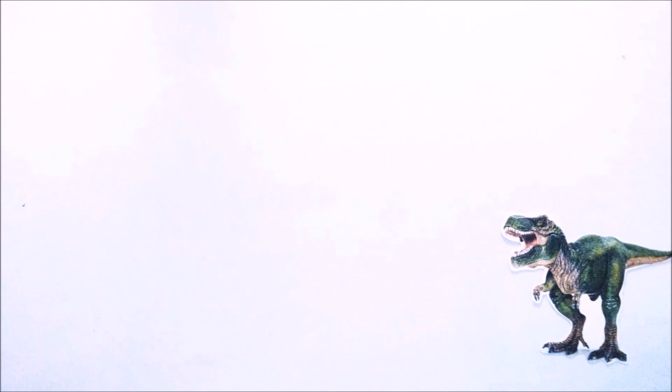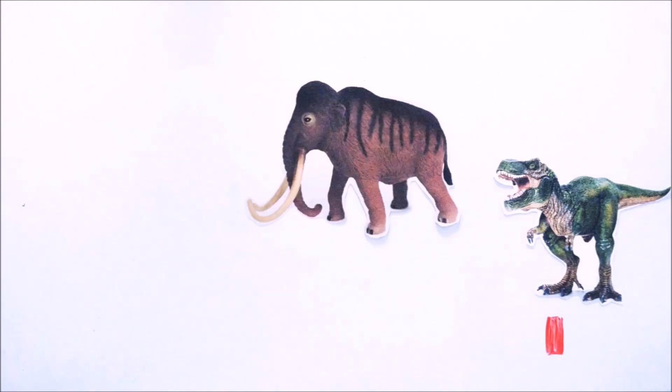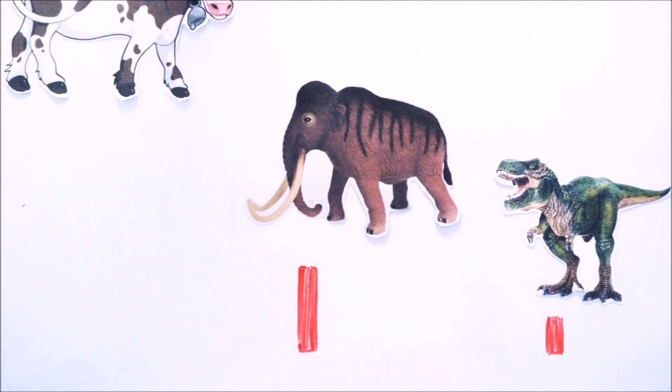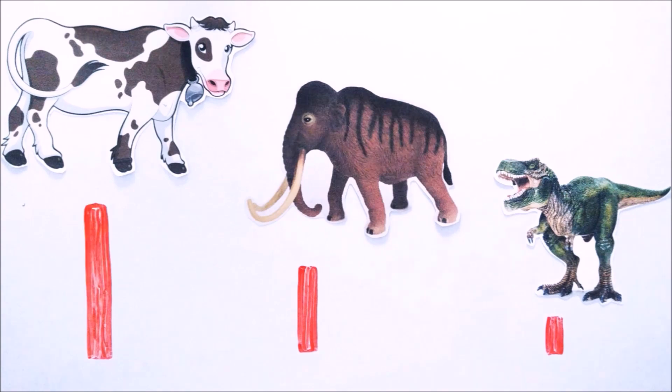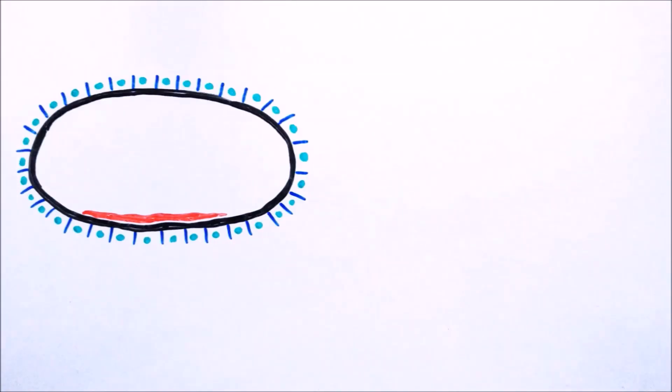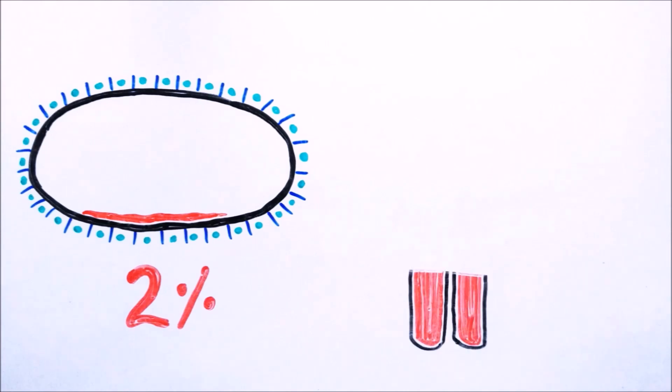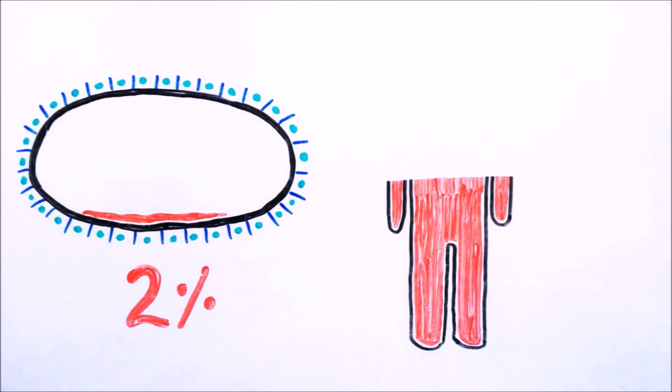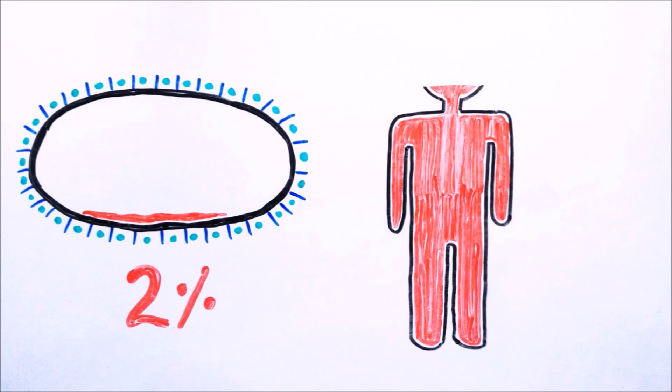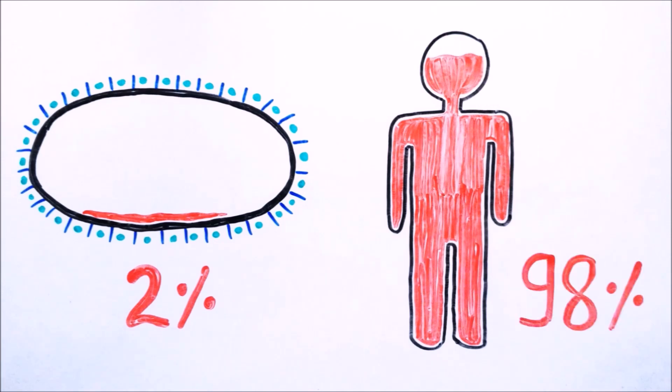That is the reason why earlier species have less junk DNA compared with later species. For example, in bacteria, 2% of genetic material is junk, while in humans, it is almost 98% of total DNA.